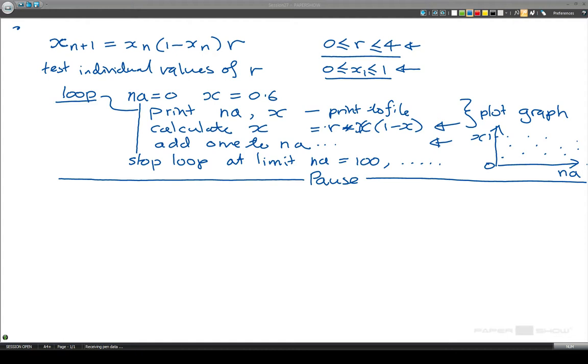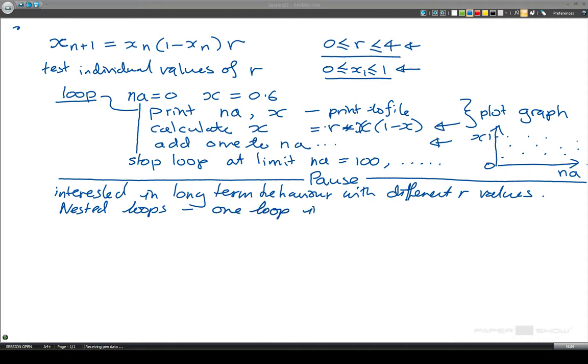Okay, so if you've done that and tried different values of r, then we're ready for the next stage. And the next stage is slightly different. We are interested in long-term behavior with different r values. And so I'm going to describe a set of loops that you want. Now what we need here is going to be nested loops, where you put one loop inside another.